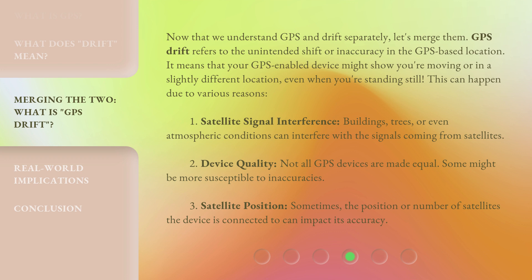1. Satellite Signal Interference: Buildings, trees, or even atmospheric conditions can interfere with the signals coming from satellites. 2. Device Quality: Not all GPS devices are made equal — some might be more susceptible to inaccuracies. 3. Satellite Position: Sometimes the position or number of satellites the device is connected to can impact its accuracy.